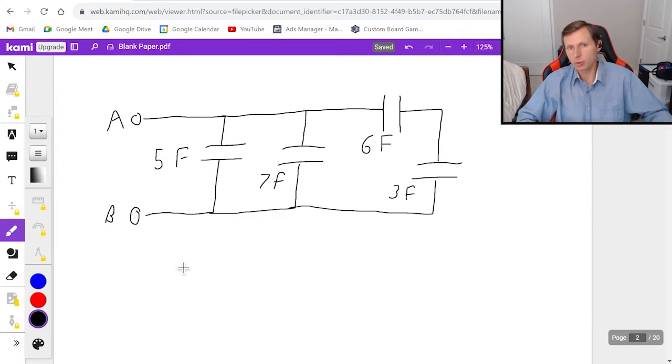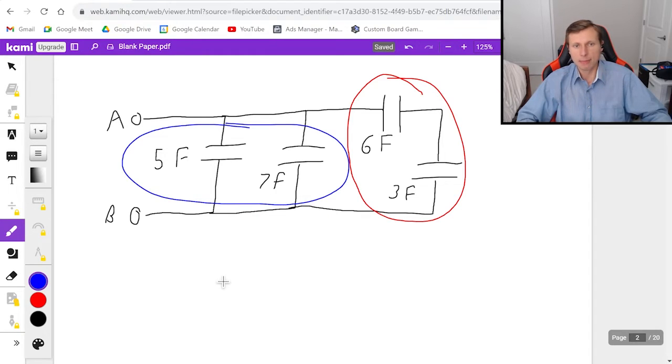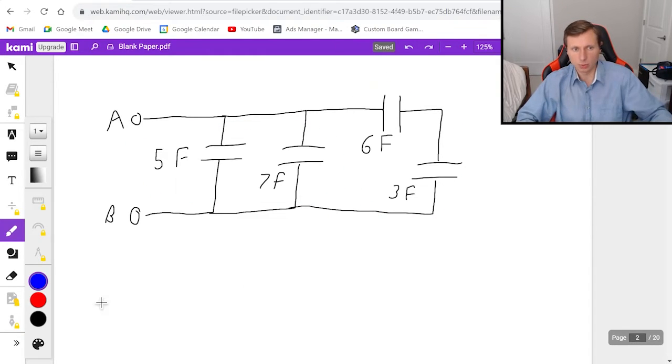So the first thing you need to know is whenever you have like a lot of capacitors like this you can only combine one section at a time. So for instance the two options you could do is you could either combine these first or you can combine these first. My recommendation is to combine the red one I had circled and then erased it. Let me draw it again. Definitely combine those two first.